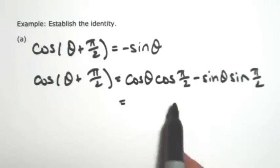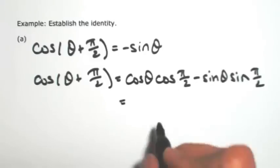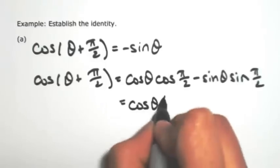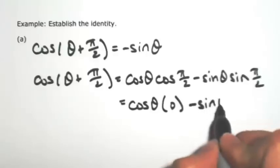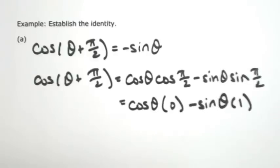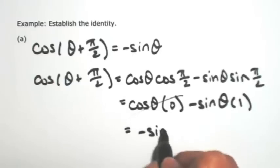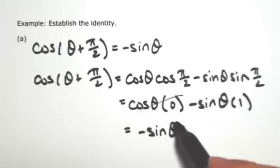And then fill in whatever you know. So we know cosine of pi over 2 and sine of pi over 2. Cosine of pi over 2 is 0, and sine of pi over 2 is 1. So the cosine of theta times 0, that just cancels, and we're left with the negative sine of theta, which is what I wanted to show.